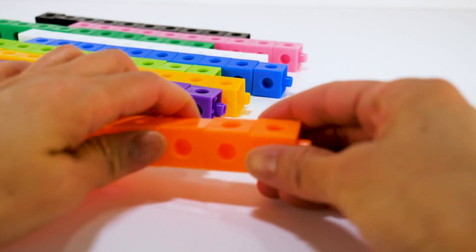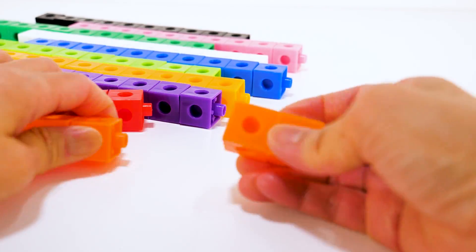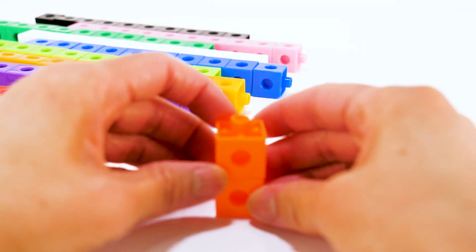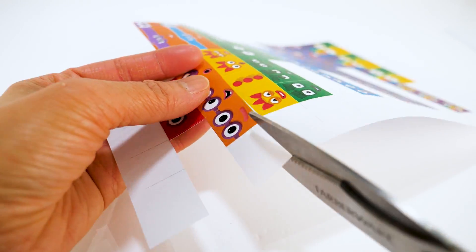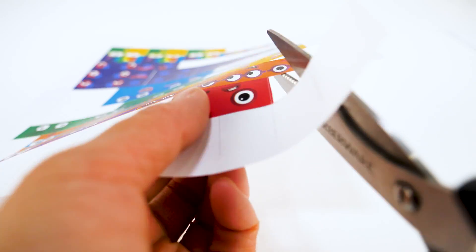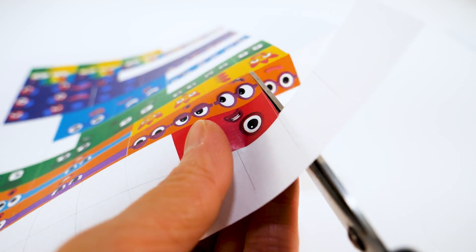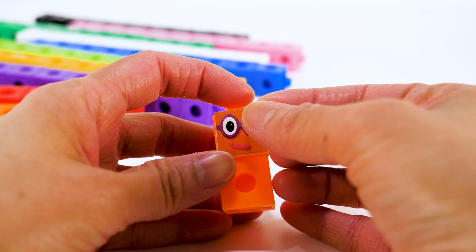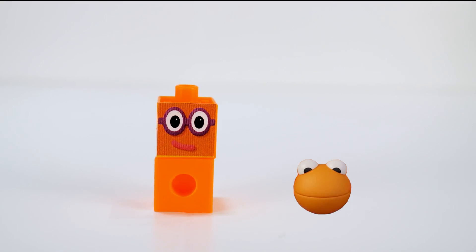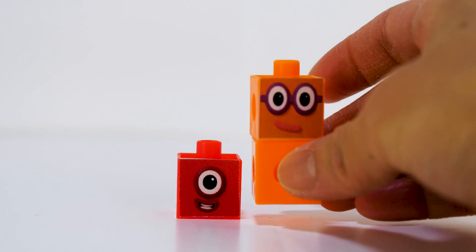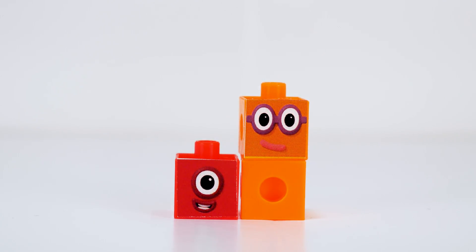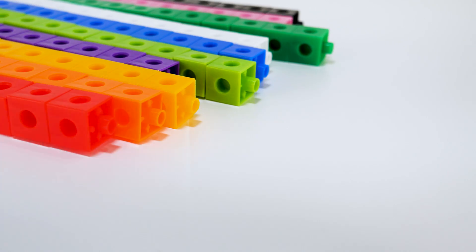Next is number block 2. He is made up of two orange blocks. He is number block 1's best friend and loves to dance. He has a pair of purple glasses. 1, 2. Everything is better with 2. Number block 2.